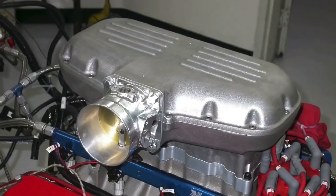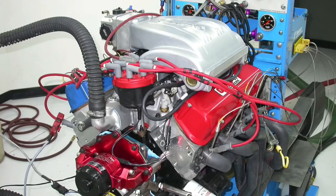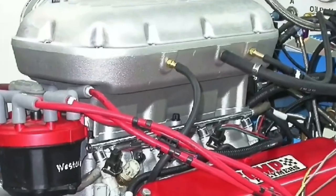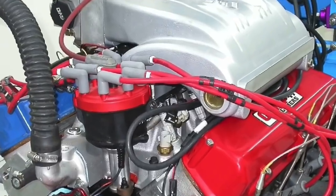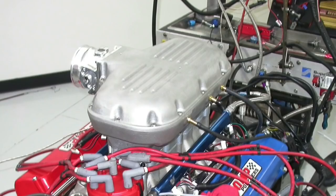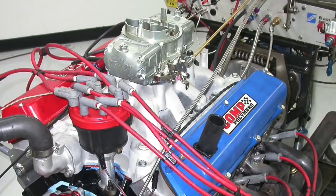In this video, we're going to take a look at the TFS Box R intake manifold on two different combinations. On our first combination, a 302-based 331 stroker, we're going to compare the Box R intake manifold to the TFS R intake manifold. Which one makes more power? In the second test, we're going to compare the TFS Box R intake manifold to a carbureted Edelbrock Super Victor intake manifold on the 408. So which one makes more power, Box R or carbureted intake? Let's take a look.